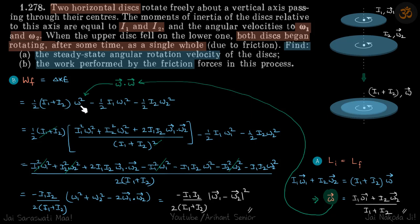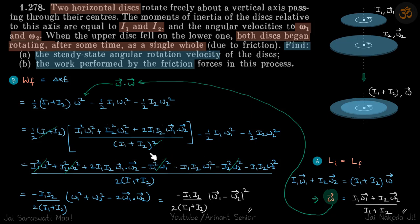Whenever we have the magnitude squared of a vector that is written as a sum or difference of two vectors, we always write it in the form of the dot product of the vector with itself. So ω² we write as ω·ω, and if we put the value of ω and take the dot product with itself, we get the expression in the brackets.